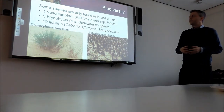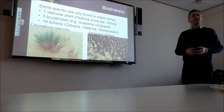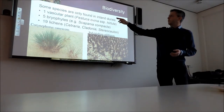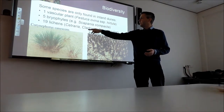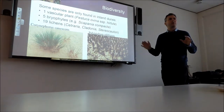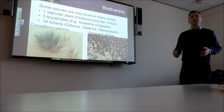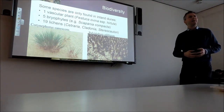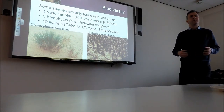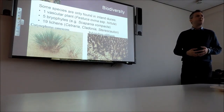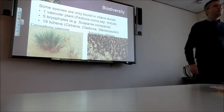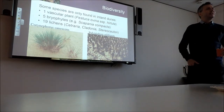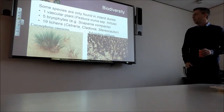If you look at the biodiversity value of inland dunes, you see one freshwater plant, five mosses, bryophytes, and 19 lichen species that occur in the Netherlands only in inland dunes. Those numbers are not very high if you compare it to a square kilometer in the rainforest, where you'd have probably more than 5,000 species. But in the Netherlands, this is already quite a lot.